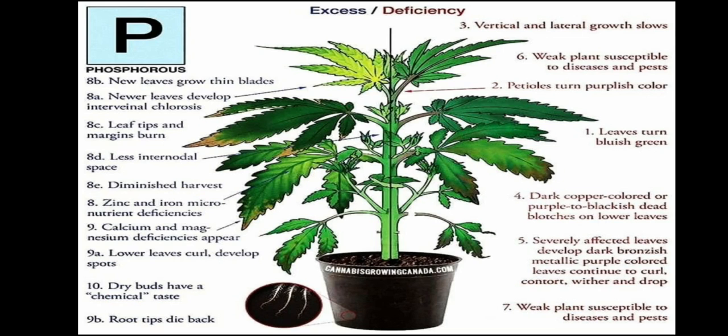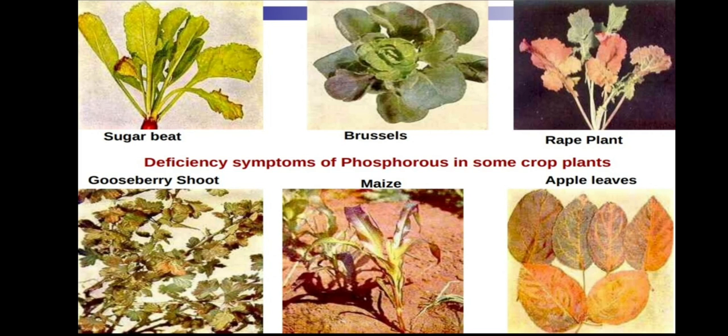Root tip dieback is important to note, along with zinc, iron, calcium, and magnesium deficiencies occurring together when phosphorus toxicity is present in the plant. Curling of lower leaves and chemical taste in dry fruits are less critical symptoms.